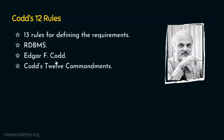Codd's 12 rules are also referred to as Codd's 12 commandments. Now, we need to understand why the name is Codd's 12 rules though it has 13 rules. Because the rules are numbered from 0 to 12 — a total of 13 rules — and the last rule is rule number 12 because the first rule starts with rule number 0.